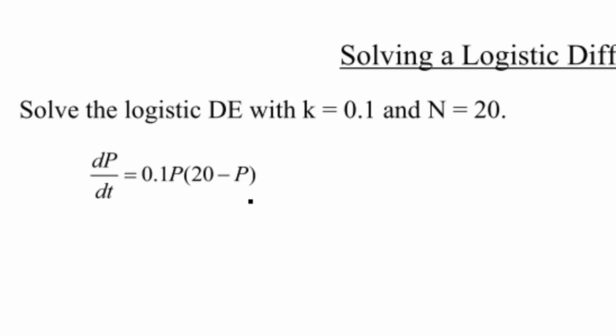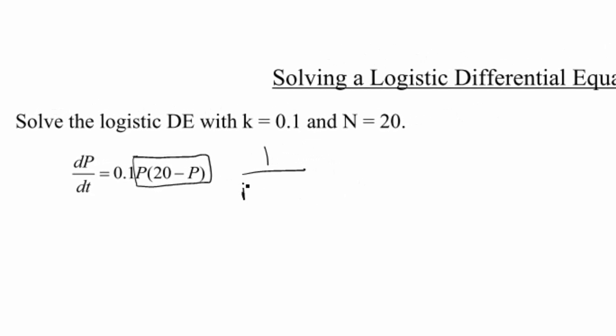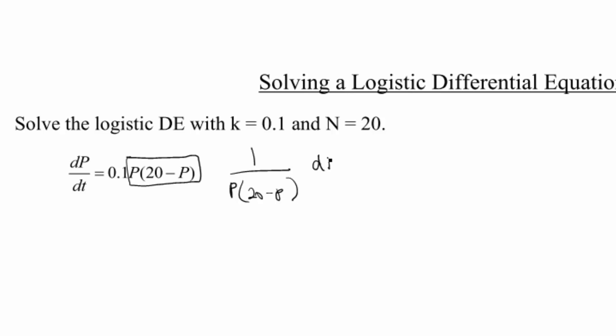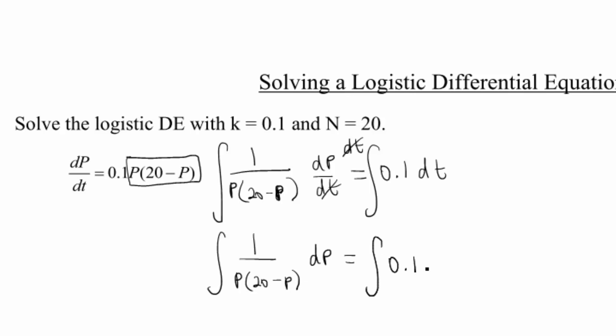First thing we want to do is basically treat it like a separable equation, except it's going to be a lot uglier unfortunately. I'm going to leave my constant on this side and move my p times 20 minus p over to the other side. So 1 over p times 20 minus p times dp/dt equals 0.1. I'm going to integrate both sides with respect to t. These are going to wipe each other out, so the integral of 1 over p times 20 minus p dp equals the integral of 0.1 dt.